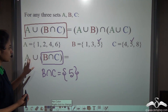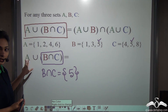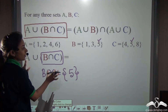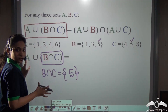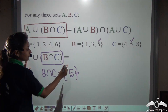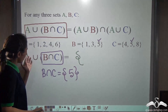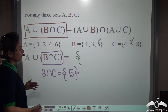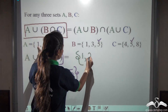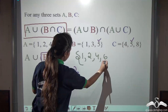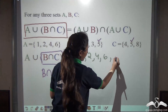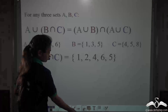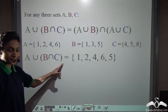We will write all the elements present in this set as well as in set A together. So A union (B intersection C) gives us 1, 2, 4, 6 and 5. So we got this result.